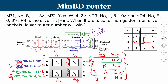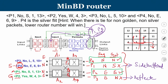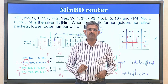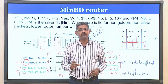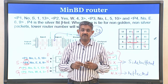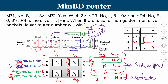P1 and P3 are both deflected and become candidates for the buffer eject unit in minbd. Both are non-golden and non-silver, so the tie-breaker applies: P1 (source router 1) has higher priority than P3 (source router 5). P1 is side-buffered rather than sent out the south port and will attempt re-injection in a subsequent cycle. P3 loses the buffer eject tie-break and is deflected out the west output port.